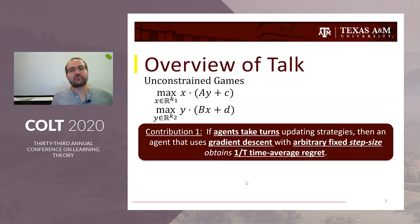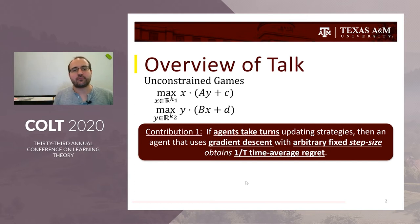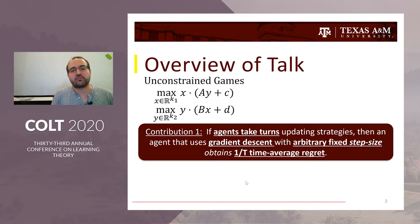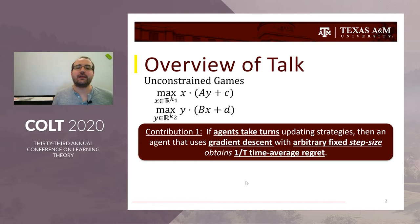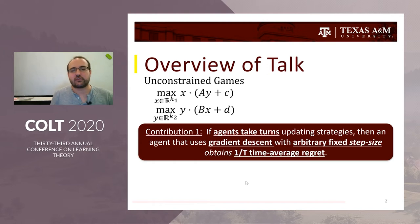In this talk, I specifically want to talk about unconstrained games, where agent one selects some multi-dimensional strategy and plays against some sort of linear combination of the opponent's strategy. In the online optimization setting, we'll play this game repeatedly where agents update strategies in each iteration.